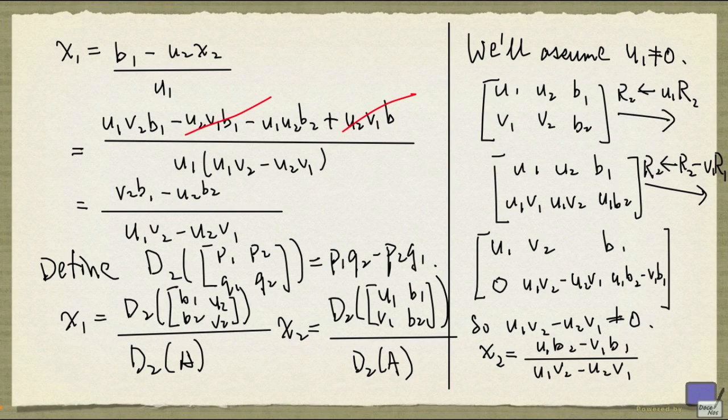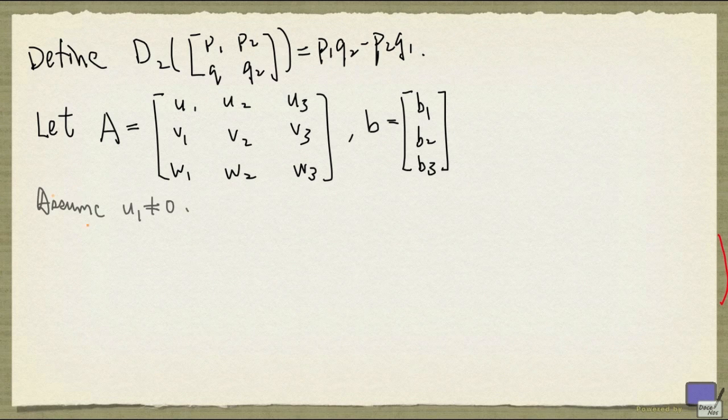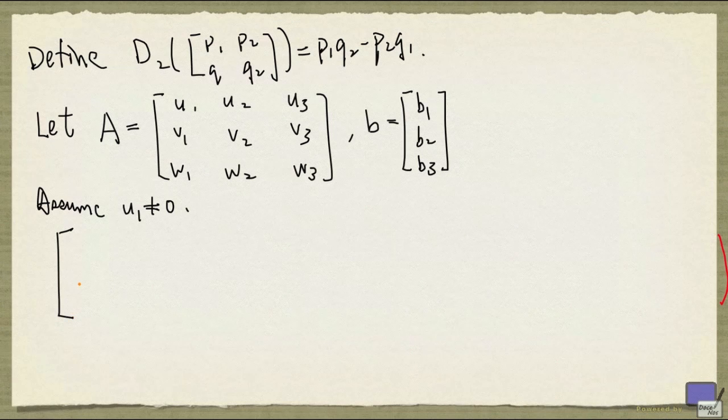Now, let's proceed to the 3 by 3 case. Again, Ax equal to b having a unique solution means that not all of u1, v1, and w1 can be zero. And we'll again assume that u1 is non-zero. You could carry out similar calculations assuming v1 non-zero or w1 non-zero, and see if you arrived at the same conclusions.